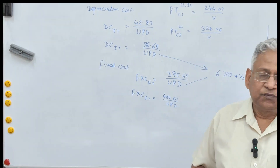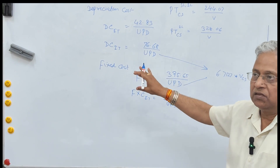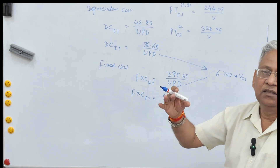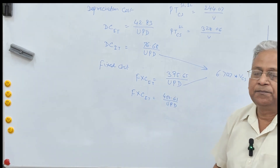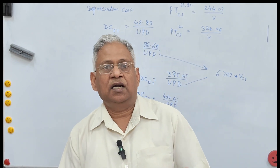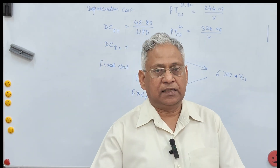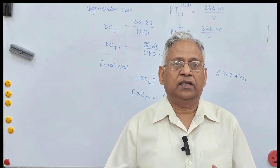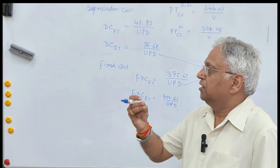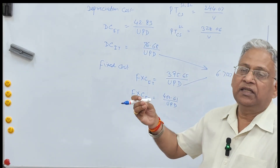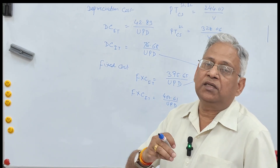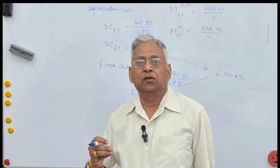All these tables and equations are for free flow conditions of traffic. As traffic volume increases, congestion increases, speed reduces, acceleration, deceleration and overtaking manoeuvres become frequent, and that would increase the vehicle operating cost. Therefore the congestion effect should also be considered while calculating VOC.